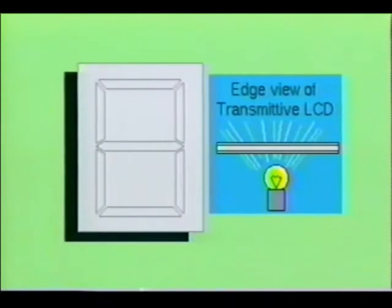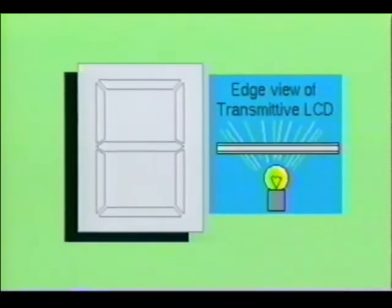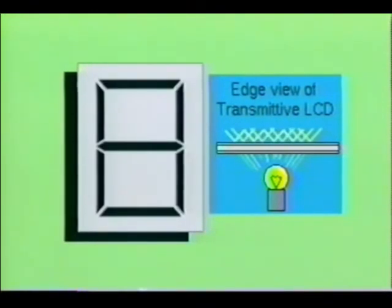When not activated, the transmittive-type cell simply transmits the rear or edge lighting through the cell in straight lines. In this condition, the cell will appear transparent. However, when activated, the incident light is diffused forward and the cell will appear quite bright, even under bright ambient light conditions.